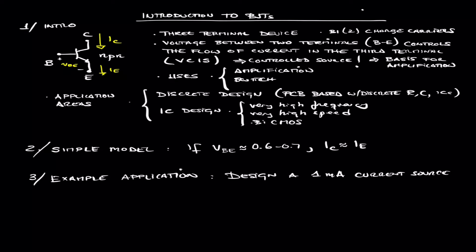The first thing to keep in mind is that transistors are three terminal devices. In the case of a BJT, we have a base terminal, an emitter terminal, and a collector terminal.